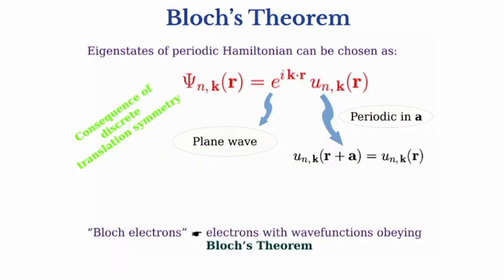Now, what is Bloch's theorem? Scientist F. Bloch proved the important theorem that the solution of the Schrödinger equation for a periodic potential must be of the special form ψₙₖ(r) = Uₙₖ(r)·e^(ik·r), where e^(ik·r) represents a plane wave and Uₙₖ(r) is periodic in A — that is, Uₙₖ(r + A) = Uₙₖ(r). Electrons with wave functions obeying Bloch's theorem are called Bloch electrons.